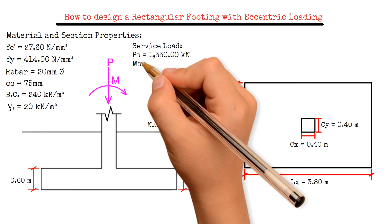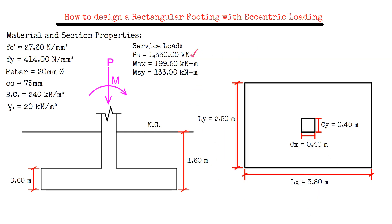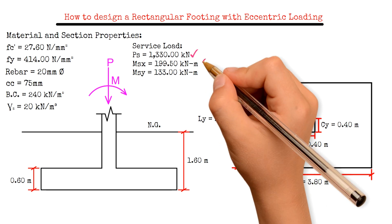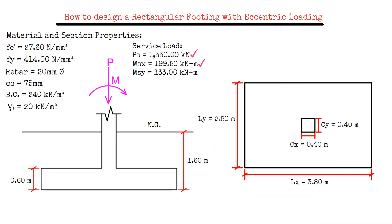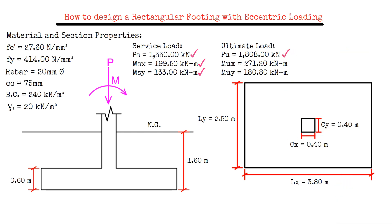For the service loads, we have an axial load PS equals 1,330 kN, a moment along the X axis MSX equals 199.5 kN·m, and a moment along the Y axis MSY equals 133 kN·m. For the ultimate loads, we have an axial load PU equals 1,808 kN, a moment along the X axis MUX equals 271.2 kN·m, and a moment along the Y axis MUY equals 180.8 kN·m.